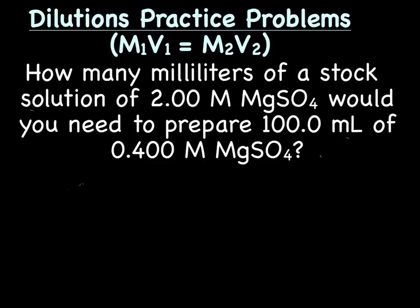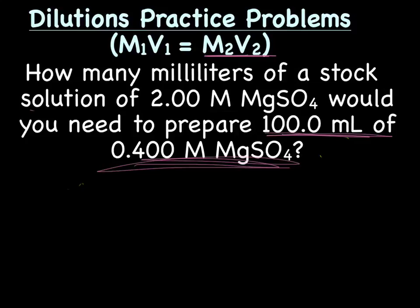All right. So, this says, how many milliliters of a stock solution of 2 molar MgSO4 would you need to prepare 100 milliliters of 0.4 molar MgSO4? Okay, so it looks to me like those go together, and we're preparing that. So those would be our twos, our final. And how many milliliters would be our X, and that goes with 2 molar. And those would be our M1V1.